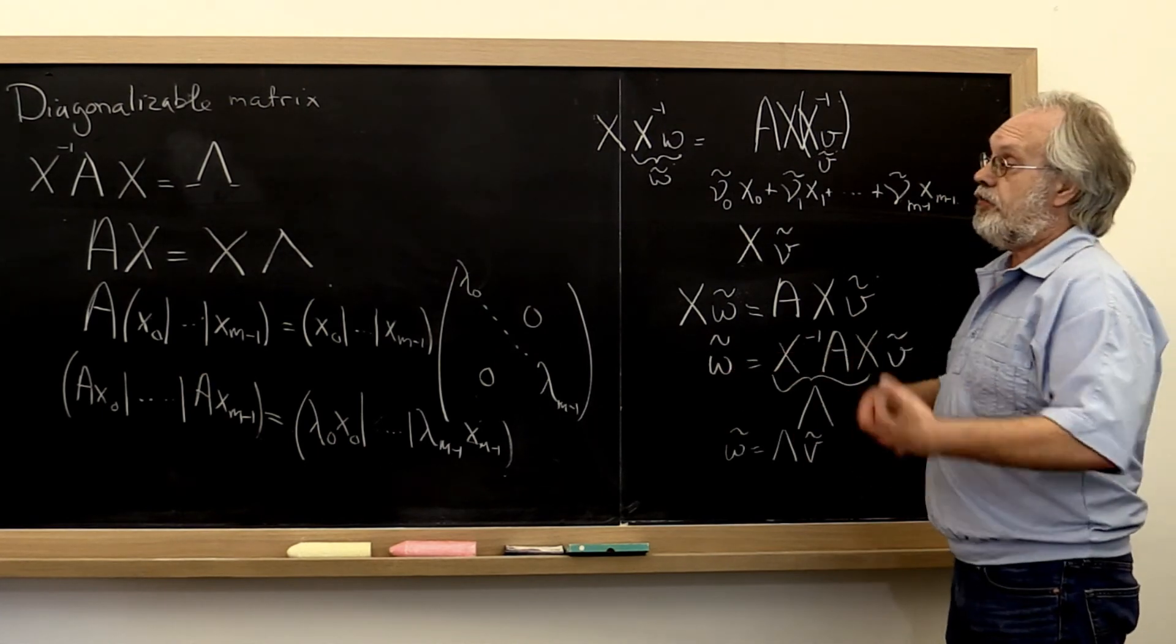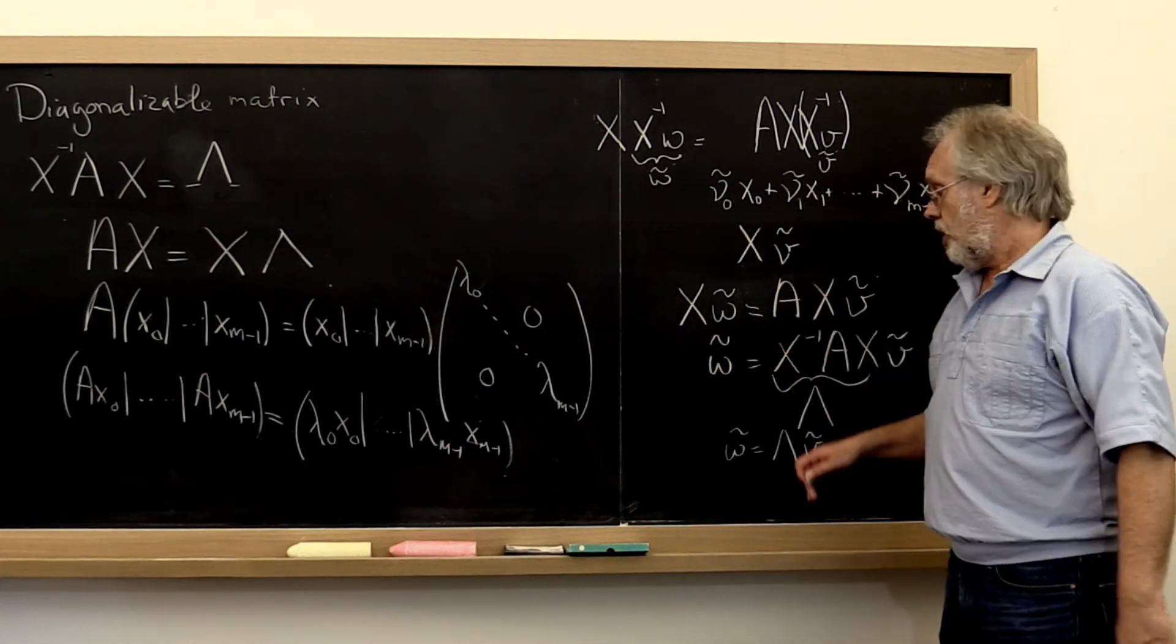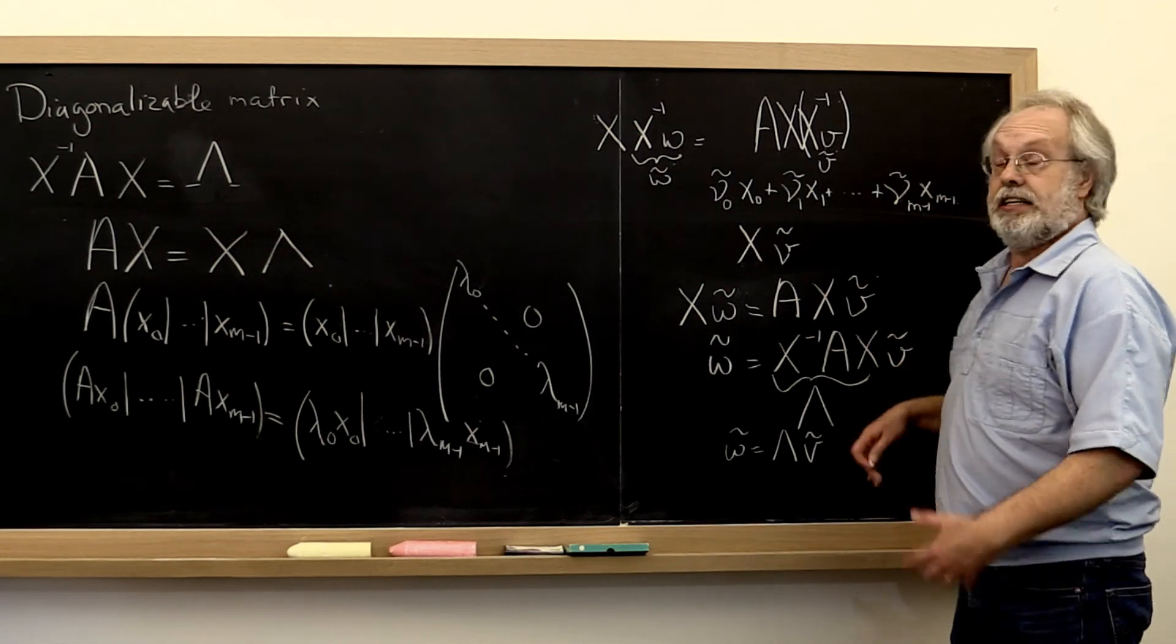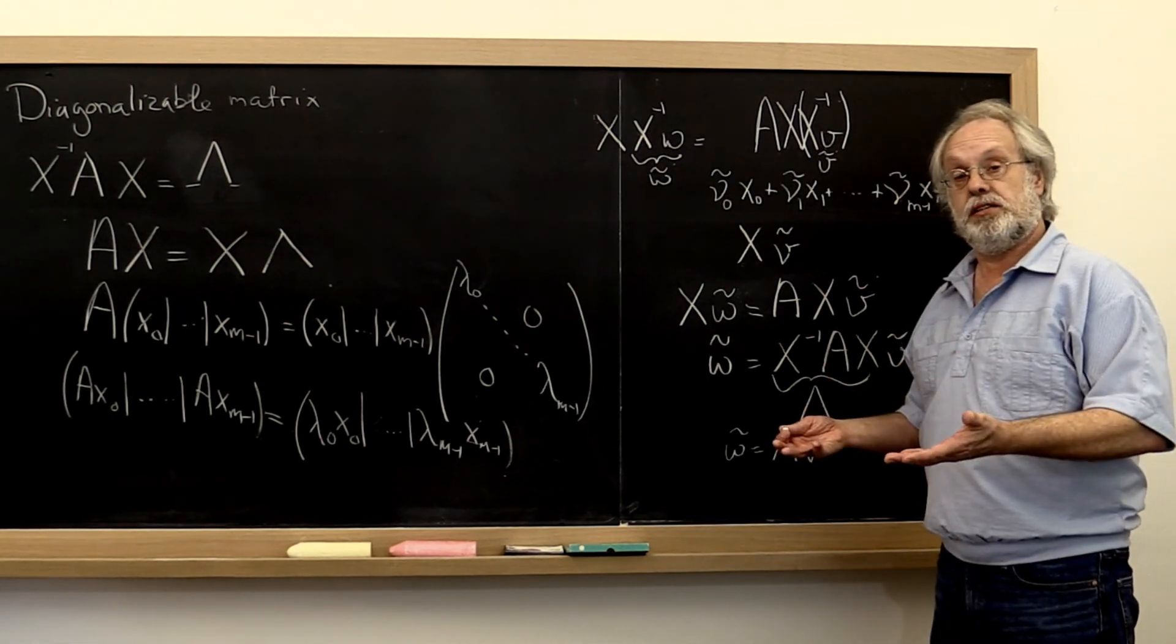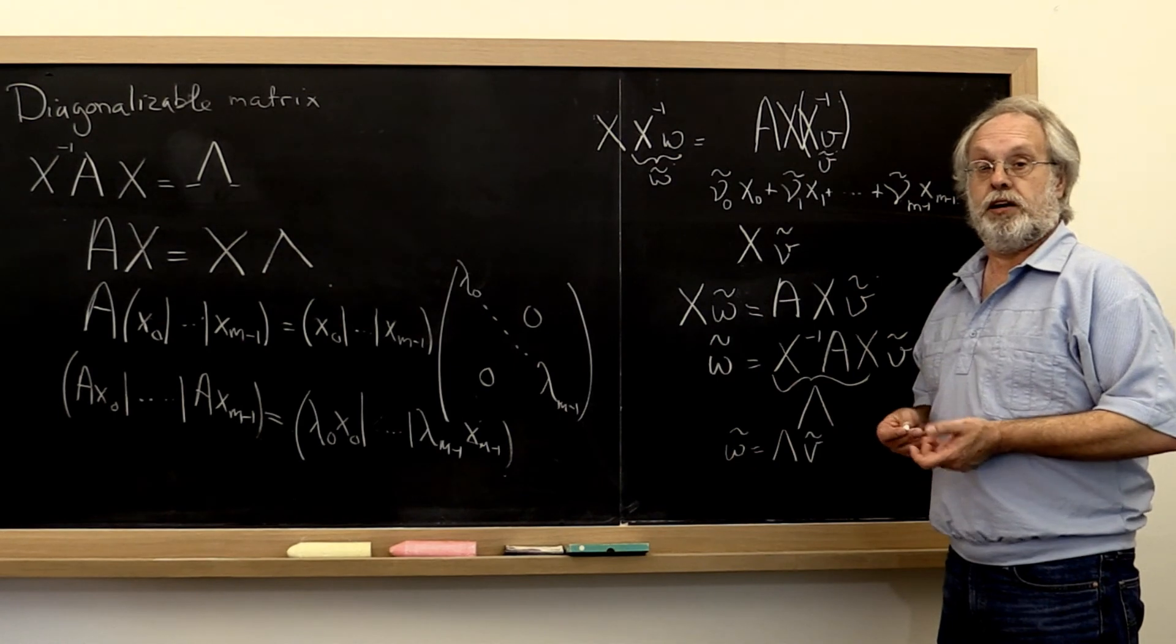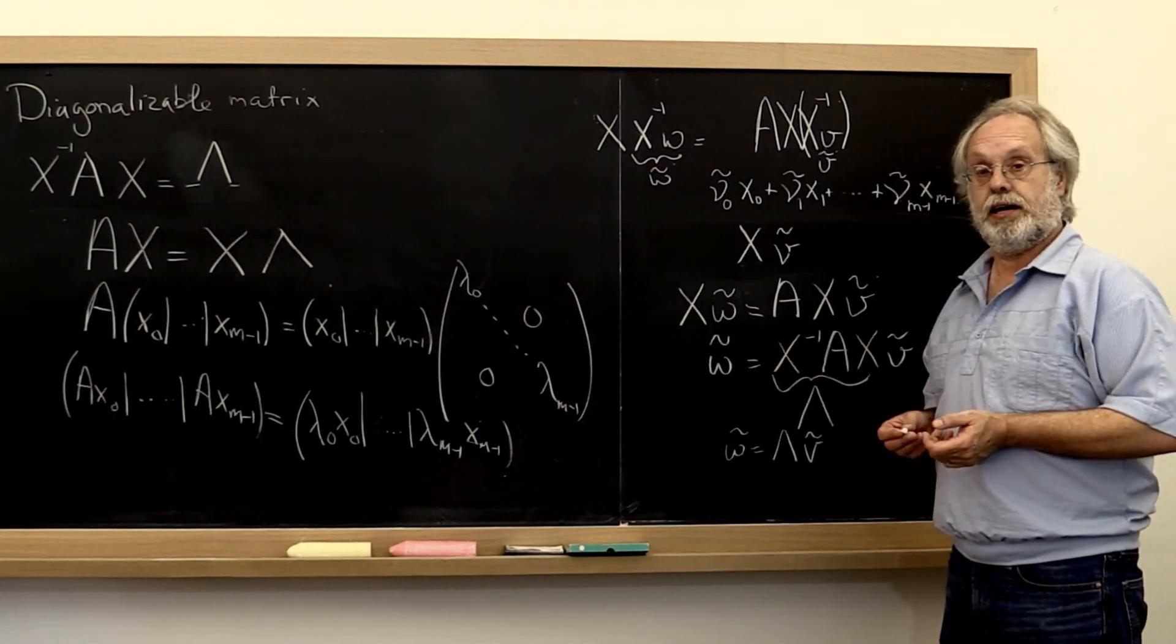And when you have a matrix that's diagonalizable, then all of a sudden you can view both in the same basis and the operator, the matrix becomes diagonal.